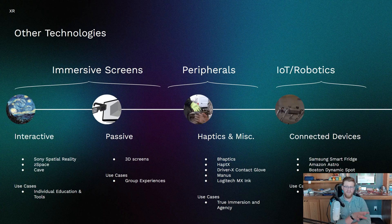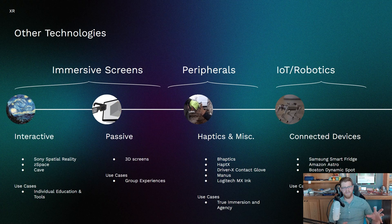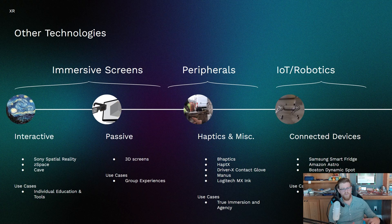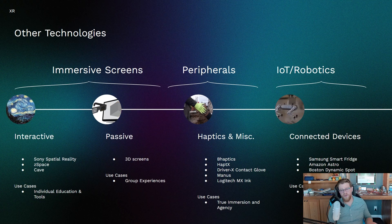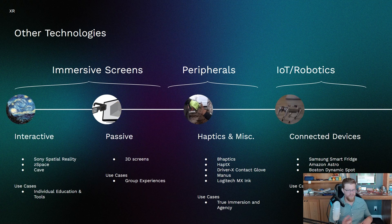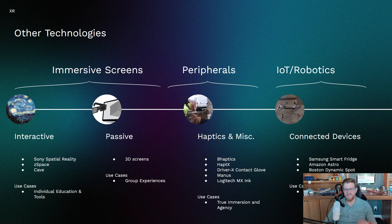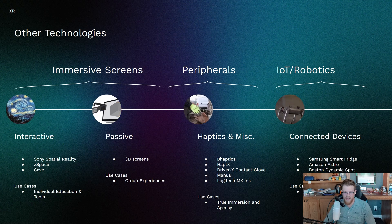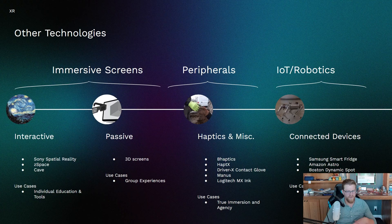Then you have peripherals, which is basically any miscellaneous item that works in tandem with VR or AR — things like gloves, boots, a 3D interactive pen, etc. I listed out things like bHaptics, HaptX, DriverX — which are all gloves — and Manus, which is another type of glove.